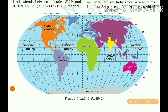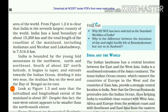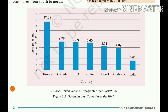India is the 7th largest country in the world, located in the Northern Hemisphere. The landmass of India has an area of 3.28 million square kilometers, which accounts for about 2.4 percent of the total geographical area of the world. A bar diagram in the textbook shows the seven largest countries: Russia, Canada, USA, China, Brazil, Australia, and India at 7th place.